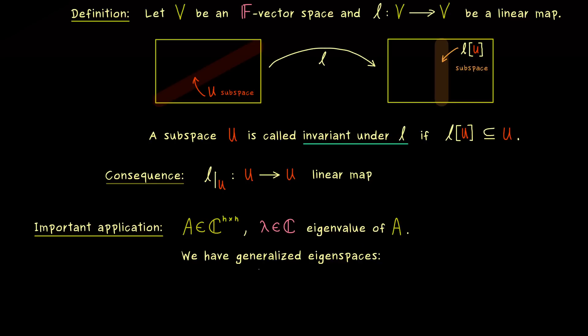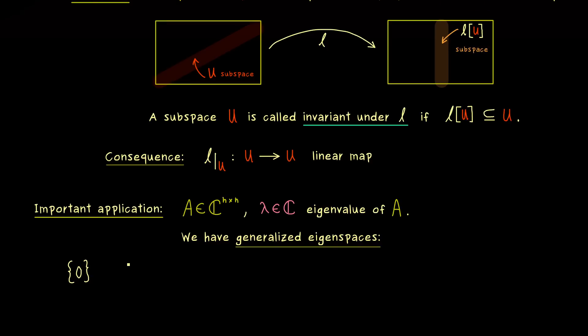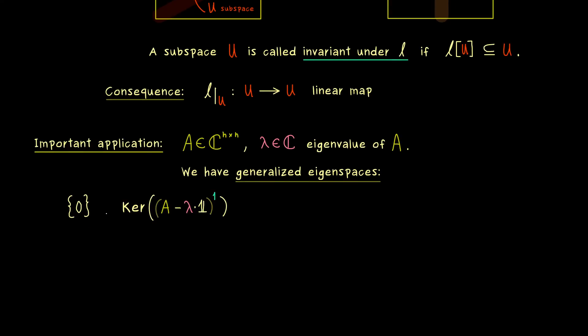And there, please recall our linear map L is just given by a square matrix A. And moreover, we know such a matrix has at least one eigenvalue in C. And let's fix one and call it lambda. And from the last video, we have already learned that we have so-called generalized eigenspaces that form a chain. This means we have kernels which increase in each step.